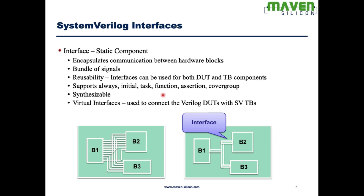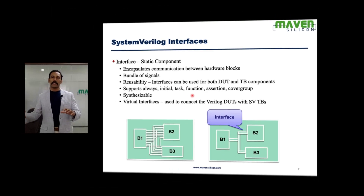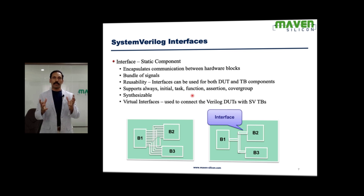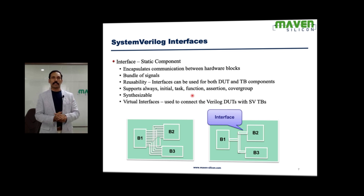SystemVerilog introduces a new component called interface. Interface itself is a static component, similar to a module — but that doesn't mean we can instantiate a module within an interface. Interface is basically meant for making connections, so the main object would be signals. Interface is nothing but a bunch of signals.